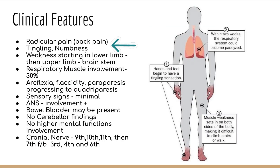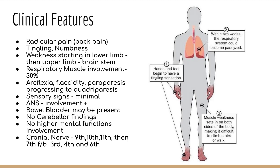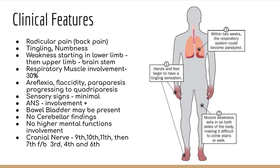Regarding clinical features, radicular pain or back pain and tingling with numbness are generally the first features to appear. An important point is that weakness starts in the lower limb and progresses towards the upper limb and then the brainstem — it is an ascending type of paralysis. Respiratory muscle involvement is seen in 30% of cases. Areflexia, flaccidity, paraparesis progressing to quadriparesis are also important clinical features.